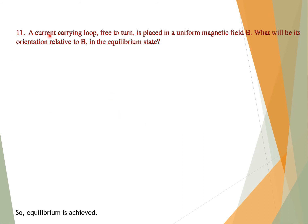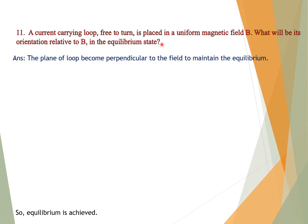Question number eleven: A current-carrying loop free to turn is placed in a uniform magnetic field B. What will be its orientation relative to B in the equilibrium state? Answer: The plane of the loop becomes perpendicular to the field to maintain equilibrium.